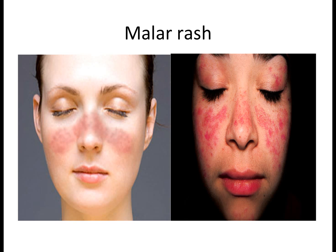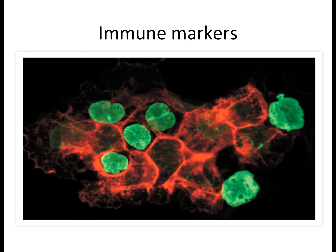One of the classic features associated with SLE is the malar rash, a butterfly-shaped rash seen on the cheeks and nose. The cause is essentially the same as discoid rashes — decreased blood flow — but also because immune complexes can deposit between the skin layers, between the epidermis and dermis, causing blister formations on the face.